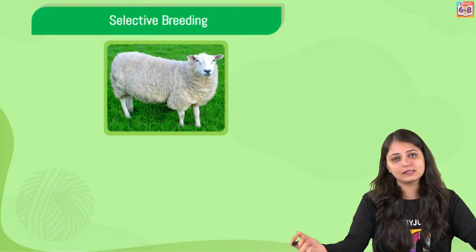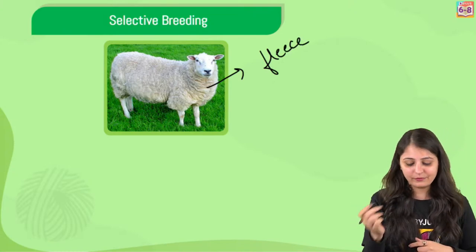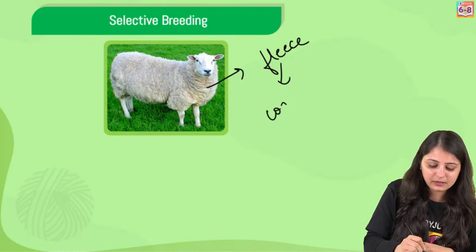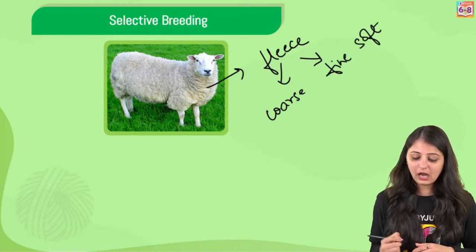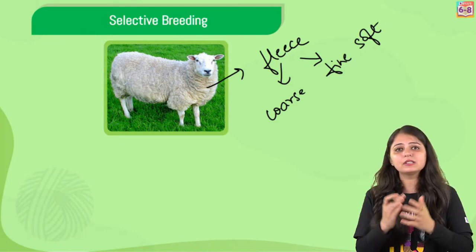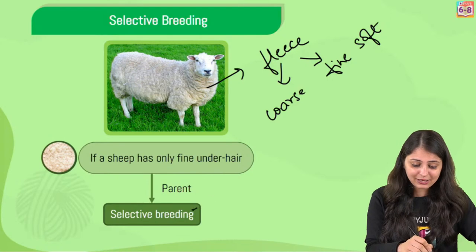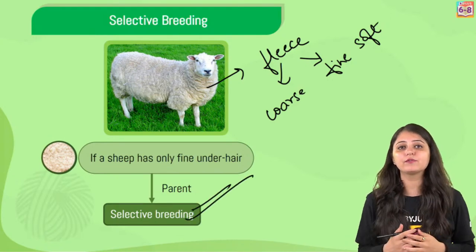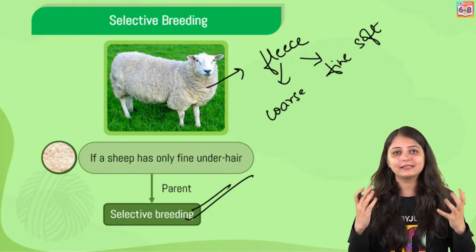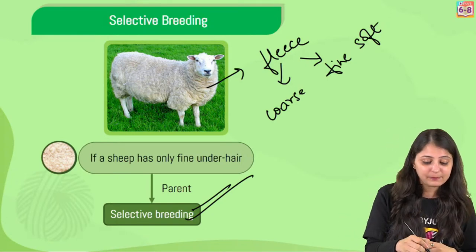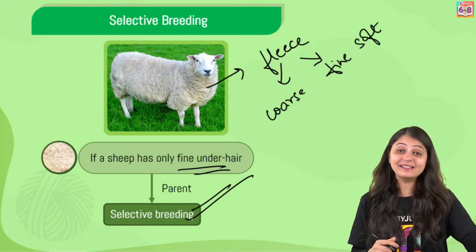Wool is obviously obtained from the fleece of sheep and many other animals. Fleece here can be coarse beard hair or it can also be fine soft hair. Coarse means rough - we obviously prefer the soft under hair. This brings us to a very important term: selective breeding. This is the process of selecting parents for special characteristics that we want in the offspring. If we want a sheep with only fine under hair, we have to choose the parents accordingly - that is selective breeding.